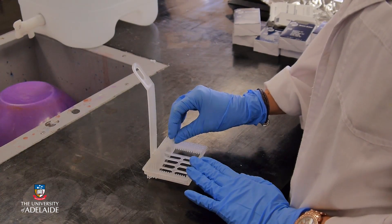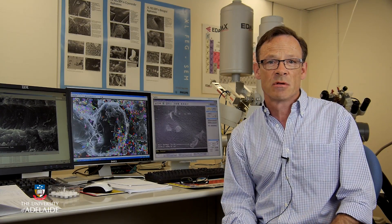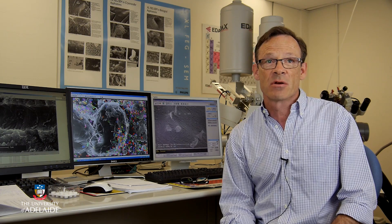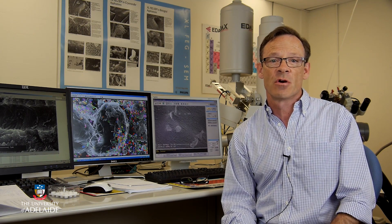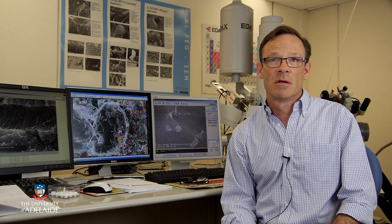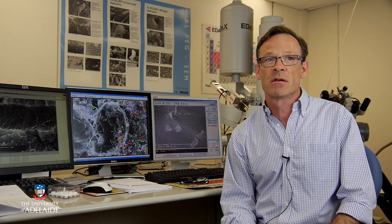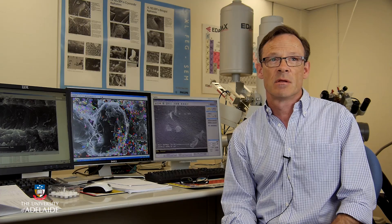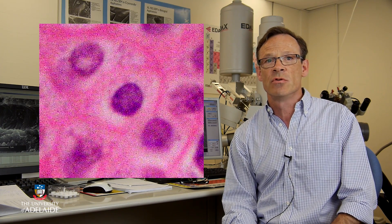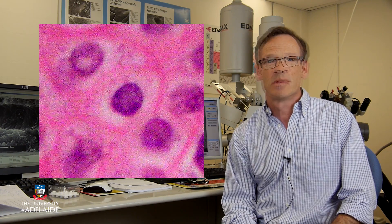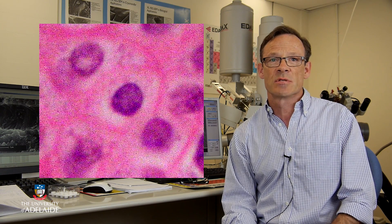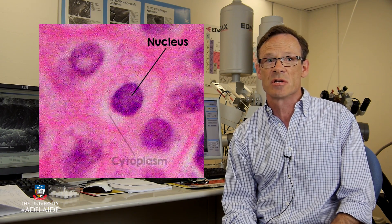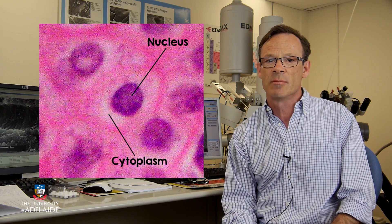The simplest microscopes are light microscopes, often called optical microscopes. Light microscopes have been around for over 200 years. They use beams of light to magnify the cells by more than a hundred times. Here is an image of a cell viewed by light microscopy. Whilst light microscopes make it relatively easy to identify the nucleus and cytoplasm, not much else can be seen.